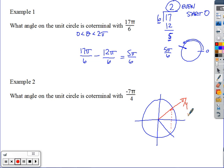The algebraic strategy would be to take negative 7π over 4 and add 2π to it. And when I do that, I get π over 4.